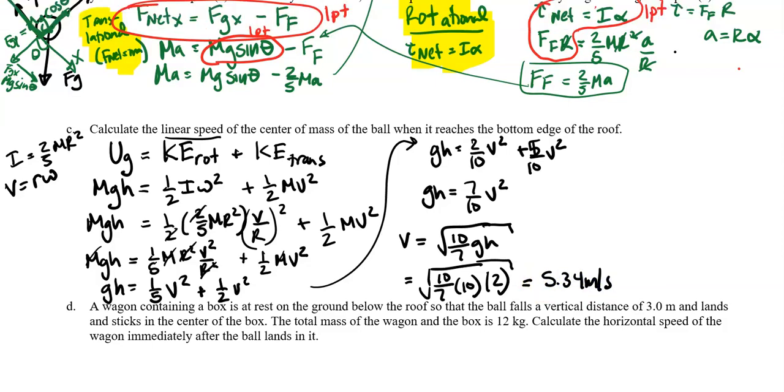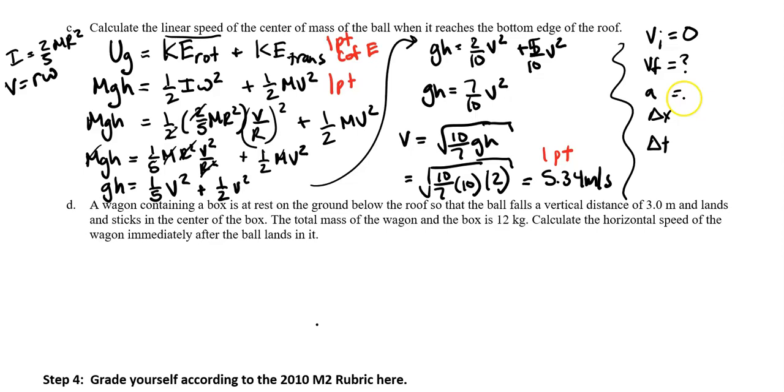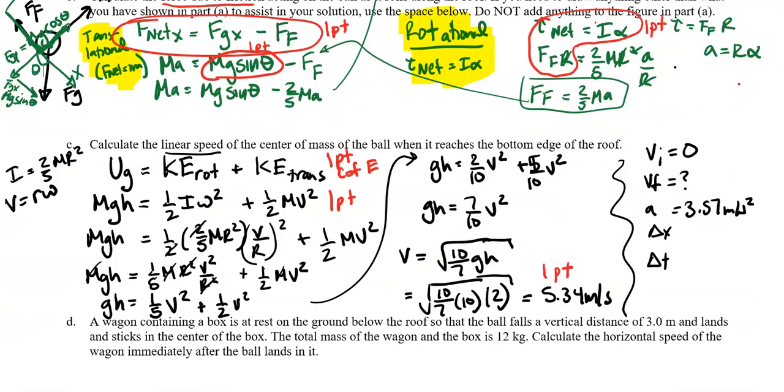Let's go through the scoring rubric. You get one point for using conservation of energy. One point for correctly putting MGH, K rotational, and K translational in their equations. And one point for your answer. As a side note, you can also solve this using the constant acceleration equation. You would get one point for the acceleration, one point for using the correct equation V_F squared equals V_I squared plus 2A delta X, and one point for your answer.